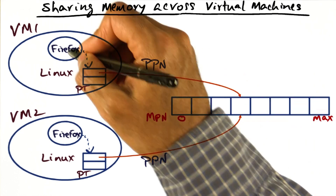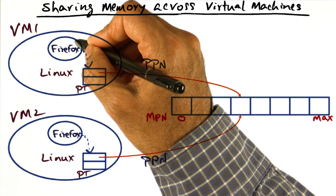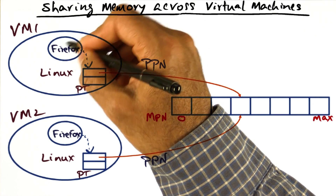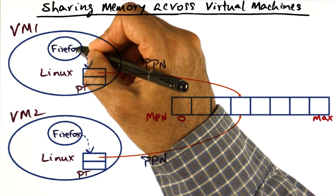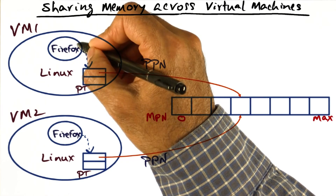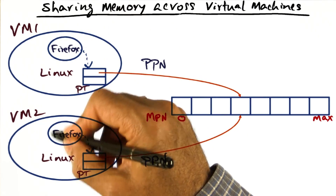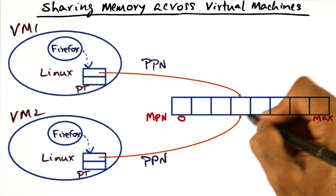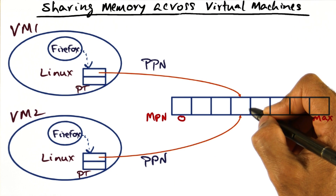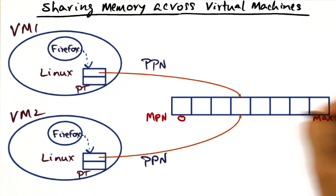This is particularly true for the code pages. The code pages are immutable, so the code pages for this Firefox instance and this Firefox instance could actually share the same page in physical memory. And if we do that, we are using the resources that much more effectively in a virtualized setting.